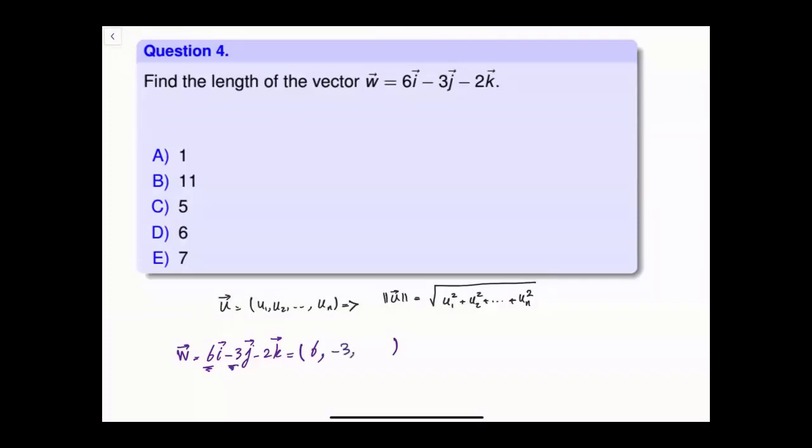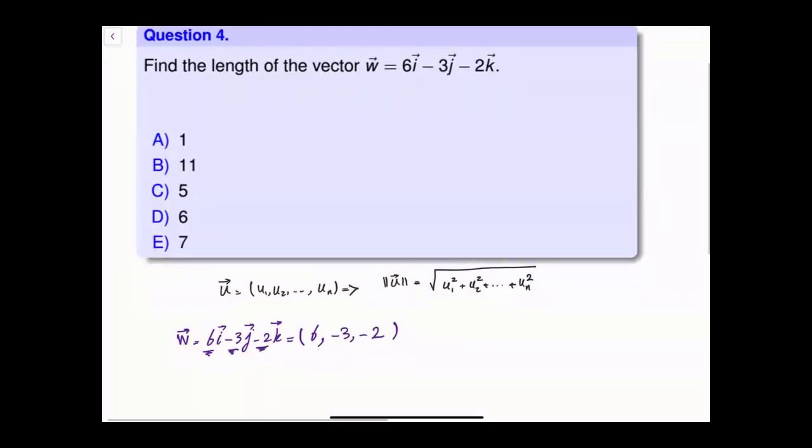So that is my vector. Now I'm trying to find its length, so I square each component, add them, and then find the square root. In this case, 6² is 36, plus -3...